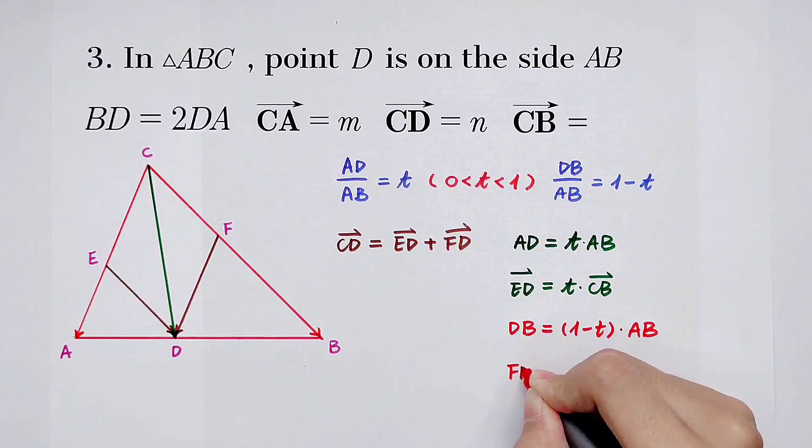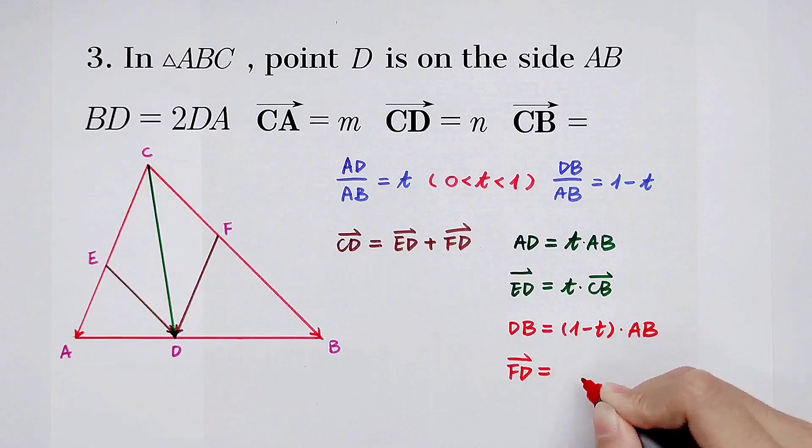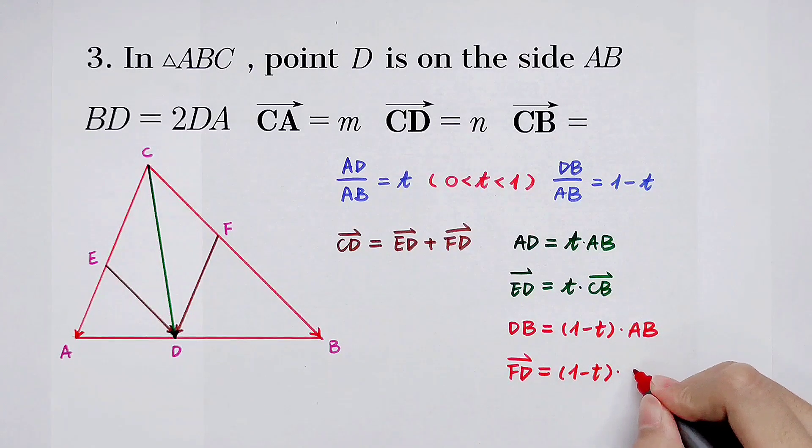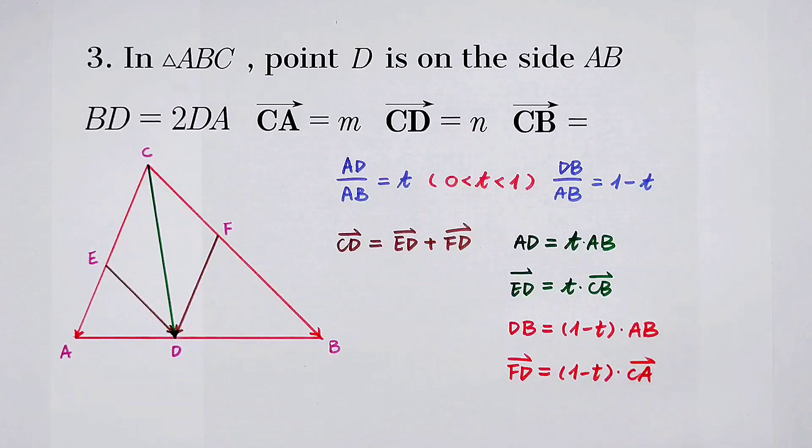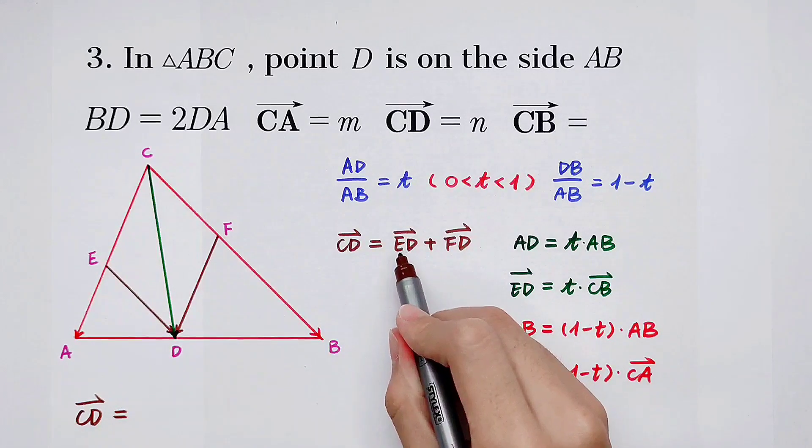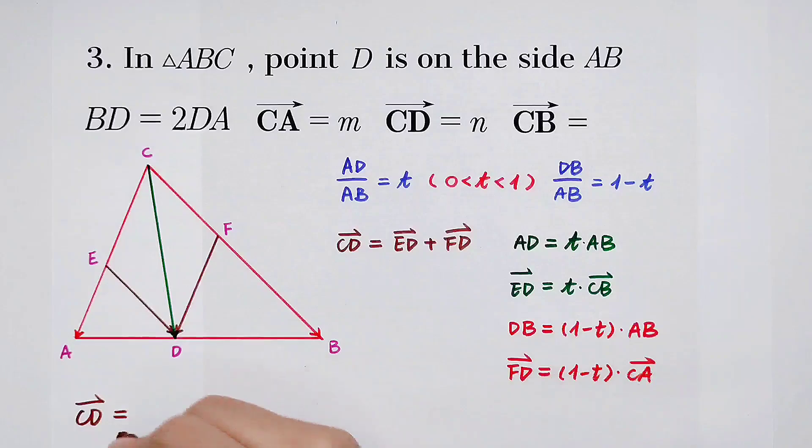So the vector FD is equal to 1 minus T, then times the vector CA. Ah, now I know. The vector CD can be written as, because the vector ED is equal to T times the vector CB, and then plus the vector FD can be written as 1 minus T, then times the vector CA.